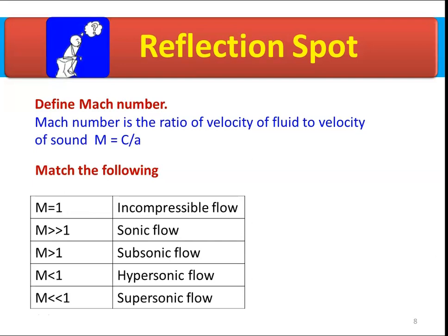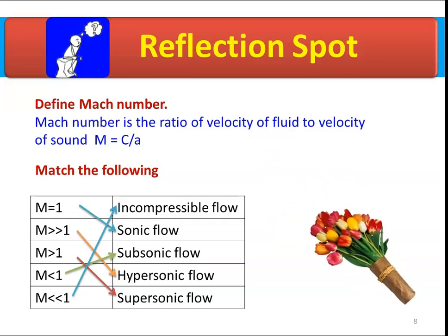Here, match the following. On the left: M = 1; M much greater than 1; M greater than 1; M less than 1; M much less than 1. On the right: incompressible flow; sonic flow; subsonic flow; hypersonic flow; supersonic flow. The correct answers are: M = 1 is sonic flow; M much greater than 1 is hypersonic flow; M greater than 1 is supersonic flow; M less than 1 is subsonic flow; and M much less than 1 is incompressible flow. If your answers match, congratulations.